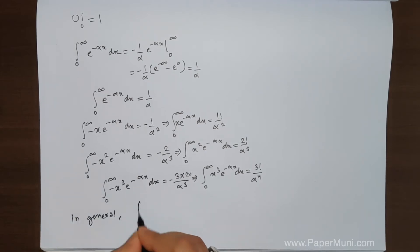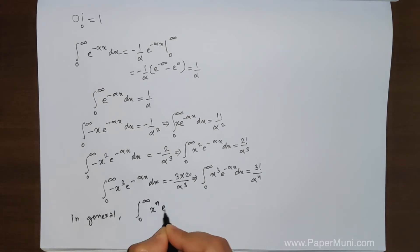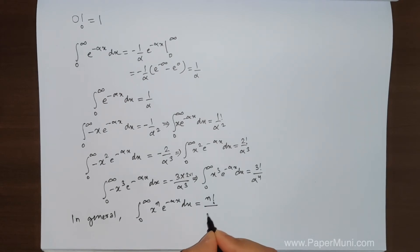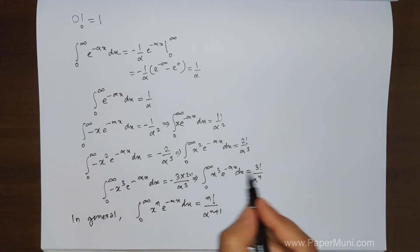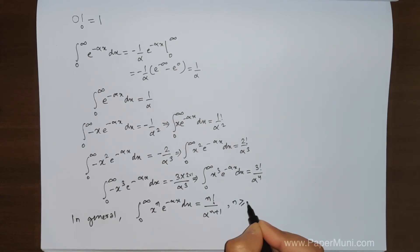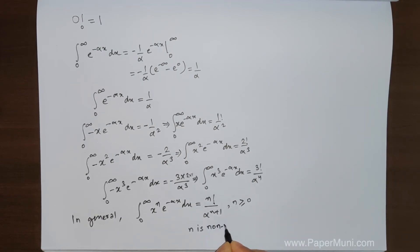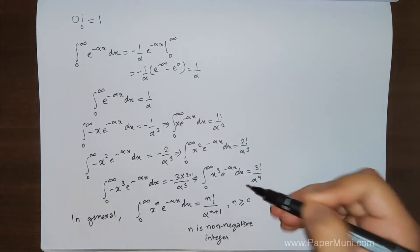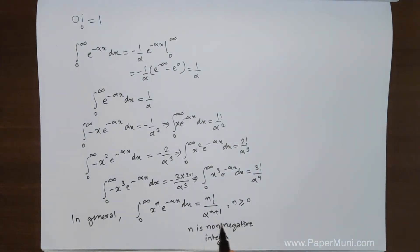In general, we observe that the integral from 0 to infinity of x to the power n times e to the power minus alpha x dx equals n factorial over alpha to the power n plus 1, where n is greater than or equal to 0, or n is a non-negative integer. We have treated n as a non-negative integer throughout this derivation. This integral represents the factorial function.